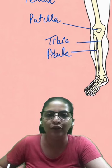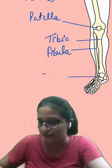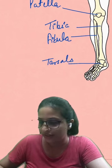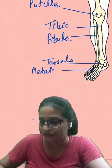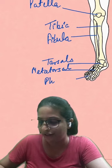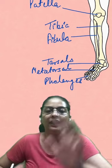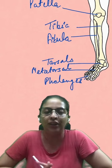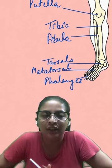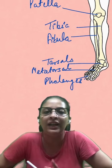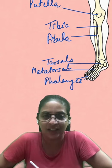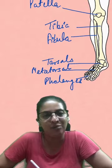After that your foot starts where you have tarsals, metatarsals, and then you have the phalanges. So in total you have 30 bones which form the entire leg and feet. That's it for today. See you tomorrow.